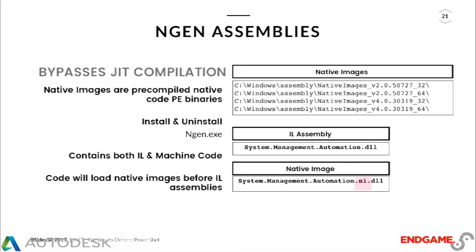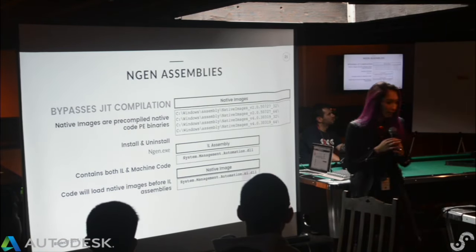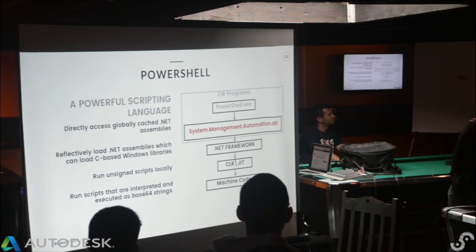NGEN assemblies — what this means is it uses NGEN.exe to pre-JIT IL code into native CPU instructions. They did this because the JIT compiler was considered too slow since it has to compile the first time it runs. It automatically creates these native images in a specific location, and it'll look for this DLL before the original DLL. You can identify the native image by the NI suffix at the end of the DLL name.